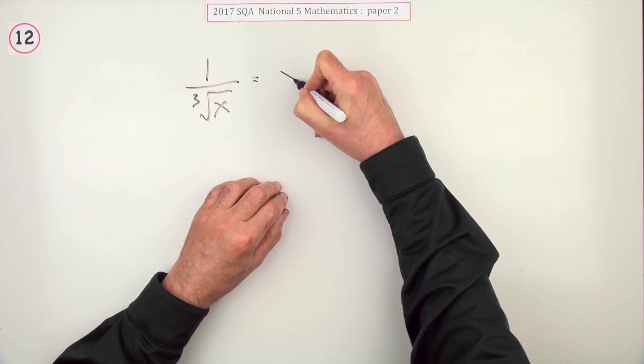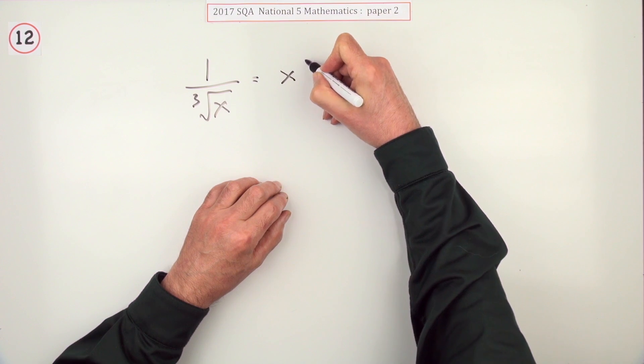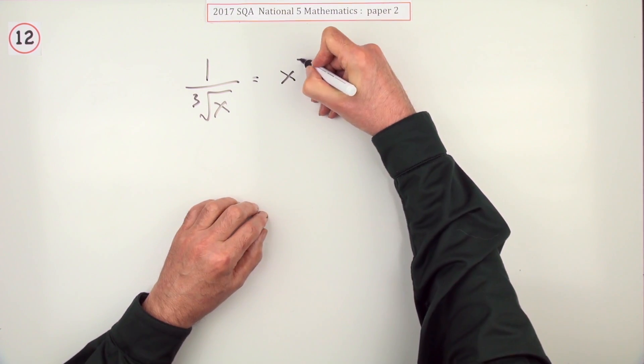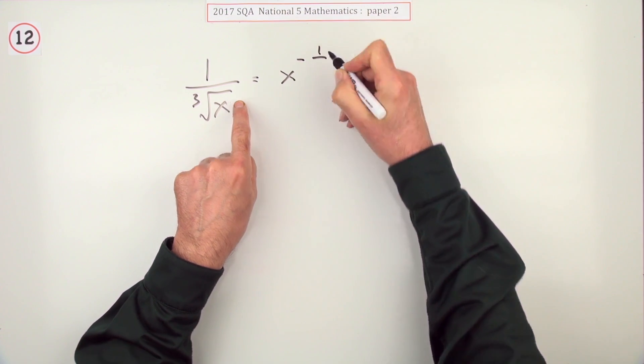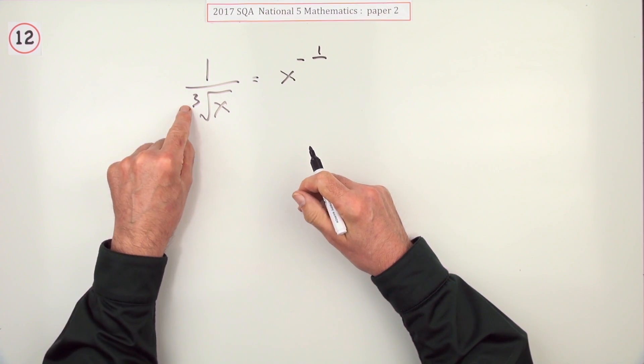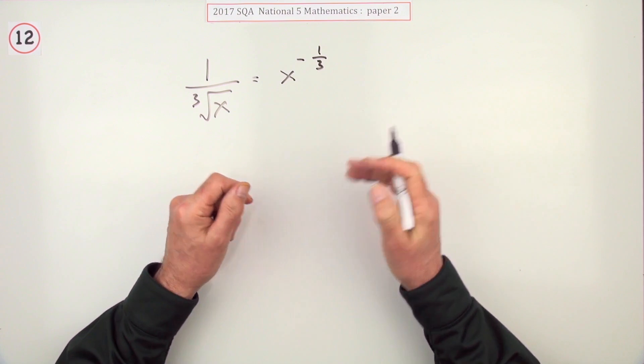So it says express that in the form of x to the n. Well it's underneath so it's got a negative index. It's power 1. So I'll put 1 on top. It's root 3. So I'll put a 3 underneath. And that's it done.